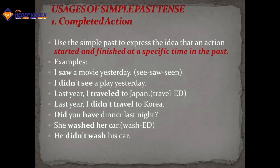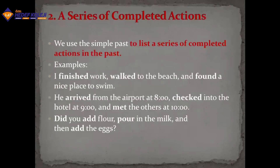A series of completed actions: we use simple past to list a series of completed actions in the past — geçmişte gerçekleşmiş olayları sıralarken de kullanabiliyoruz. For example: 'I finished work, walked to the beach, and found a nice place to swim.' 'Find' becomes 'found'. Another example: 'I arrived from the airport at eight, checked into the hotel at nine, and met the others at ten.' There is a list of series of completed actions: arriving, checking, and meeting.